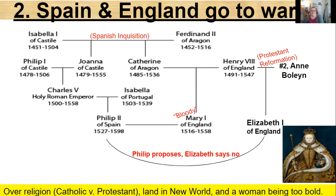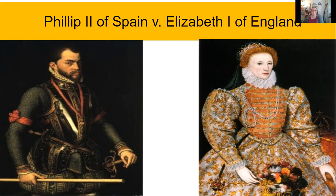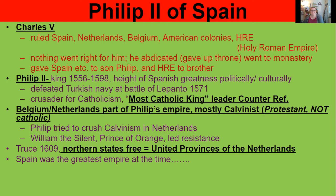They were also fighting over land in the New World. Women were thought to be too bold so that Elizabeth needed a man to take over things, but Elizabeth just straight up said no. As a result, Philip II of Spain went to war with Elizabeth I. Philip II's father Charles I ruled over Spain, the Netherlands, Belgium, and a lot of the American colonies at that point in time. He was known as the Holy Roman Emperor because he was staunchly Catholic. But nothing went right for him, so he ended up abdicating his throne.